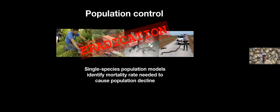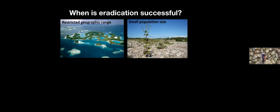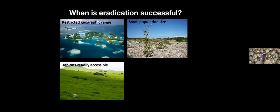Population models can identify mortality rates needed for eradication, but this will only work under certain circumstances where you can fully remove the species — places like small islands with a very restricted geographic range, very small population sizes early in introductions, habitats that are readily accessible so you can move across and find invaders, and invaders that are easily removed.